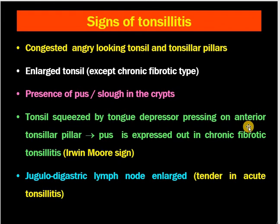The signs of tonsillitis are: congested and angry-looking tonsils and tonsillar pillars (especially in acute catarrhal tonsillitis); large tonsils except in chronic fibrotic type; presence of pus or slough in the crypts in acute follicular tonsillitis. Pus expressed by squeezing with a tongue depressor pressing on the anterior pillar in chronic fibrotic tonsillitis is called the Irvine Moore sign, signifying chronic tonsillitis. The triad of chronic tonsillitis is: persistent jugulodigastric lymphadenopathy, positive Irvine Moore sign, and congestion of the anterior pillar.